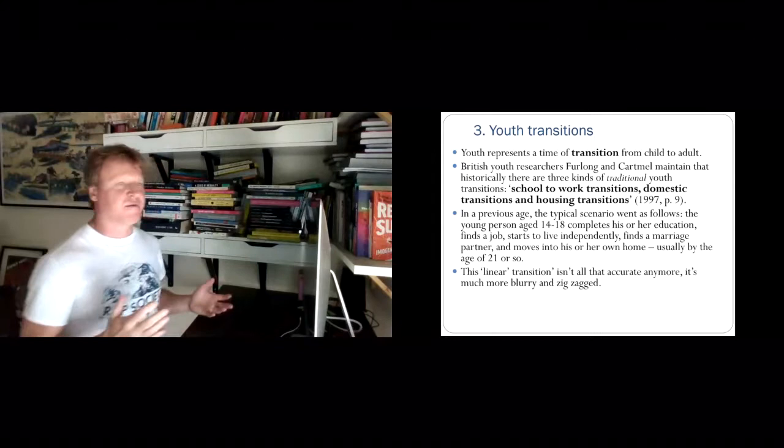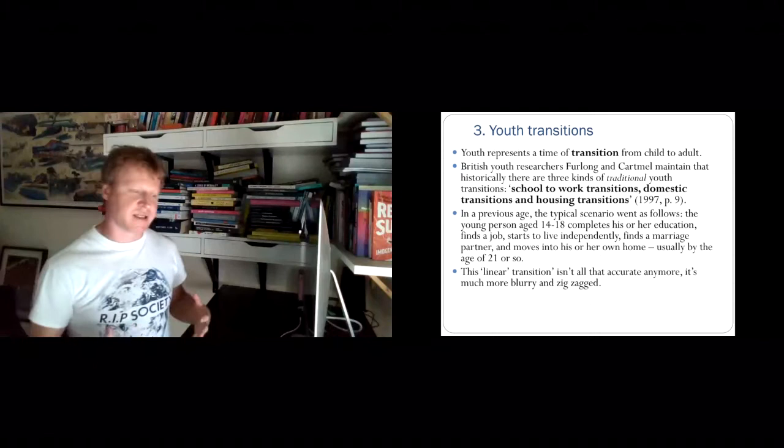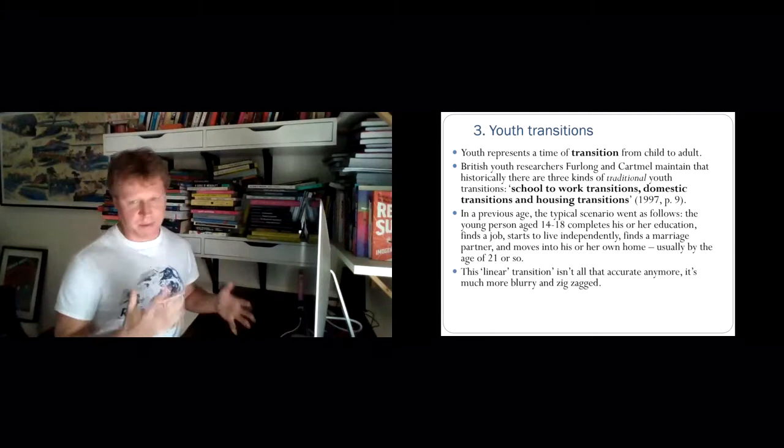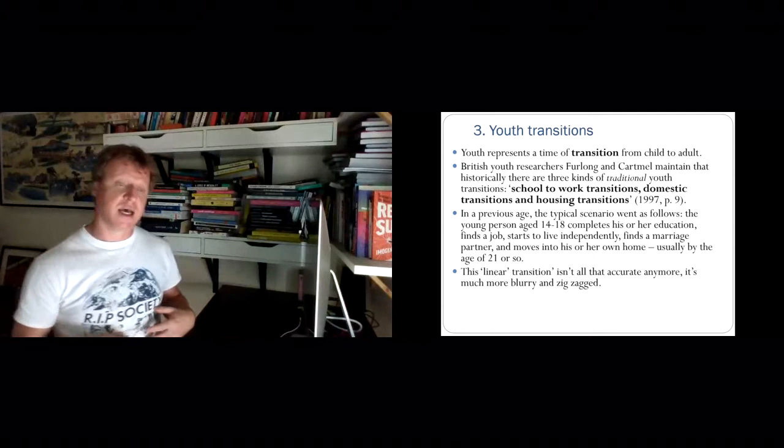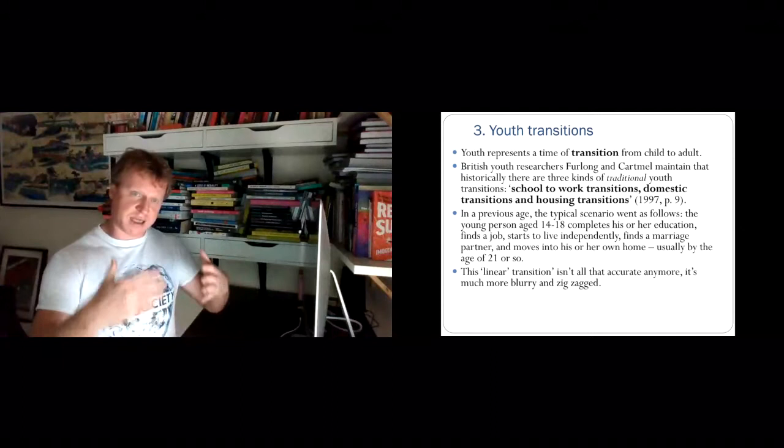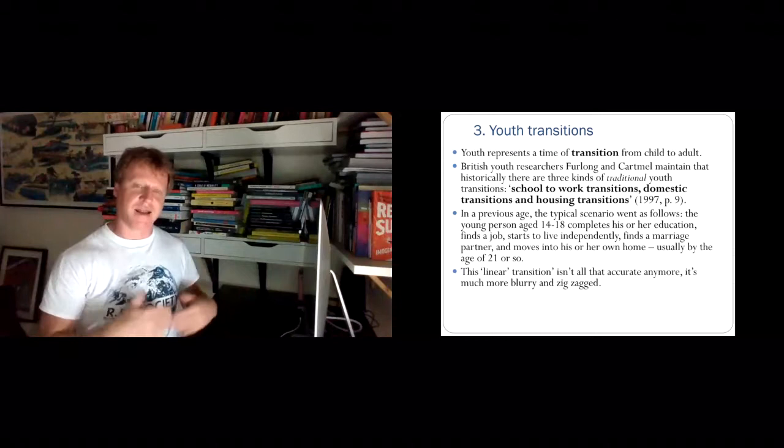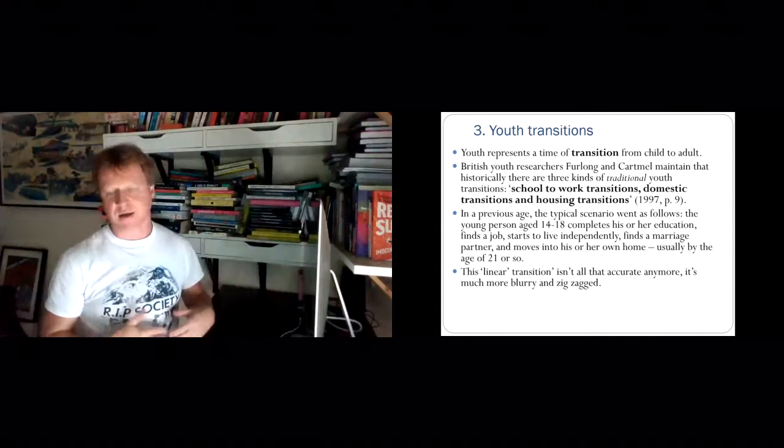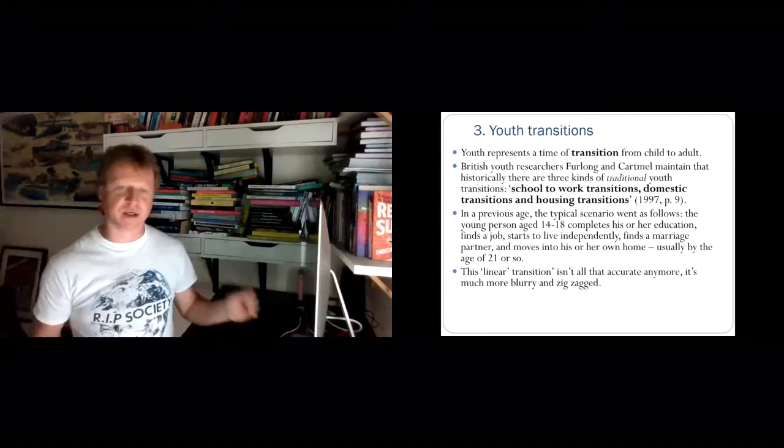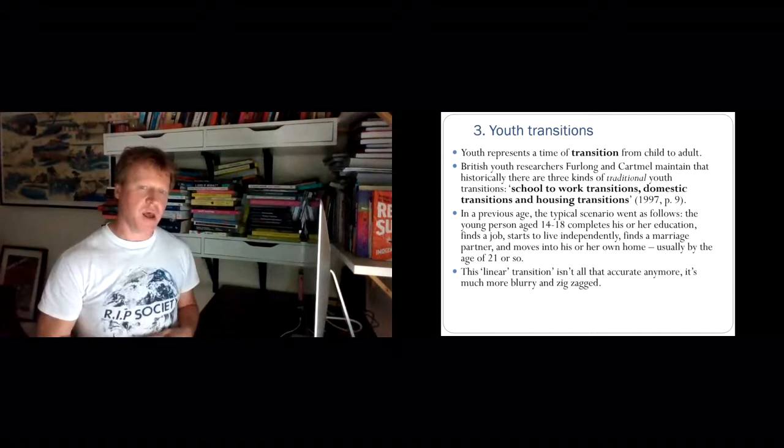Typically there was this kind of linear progression, probably never that linear, but the imagined path in the 50s and 60s was you were born, socialized, go to school, get a job, have that job for 30 or 40 years, meet someone, have a family, buy a house, retire, and die. That was this linear idea of progression from being a child to adult with markers of adulthood being ticked off.